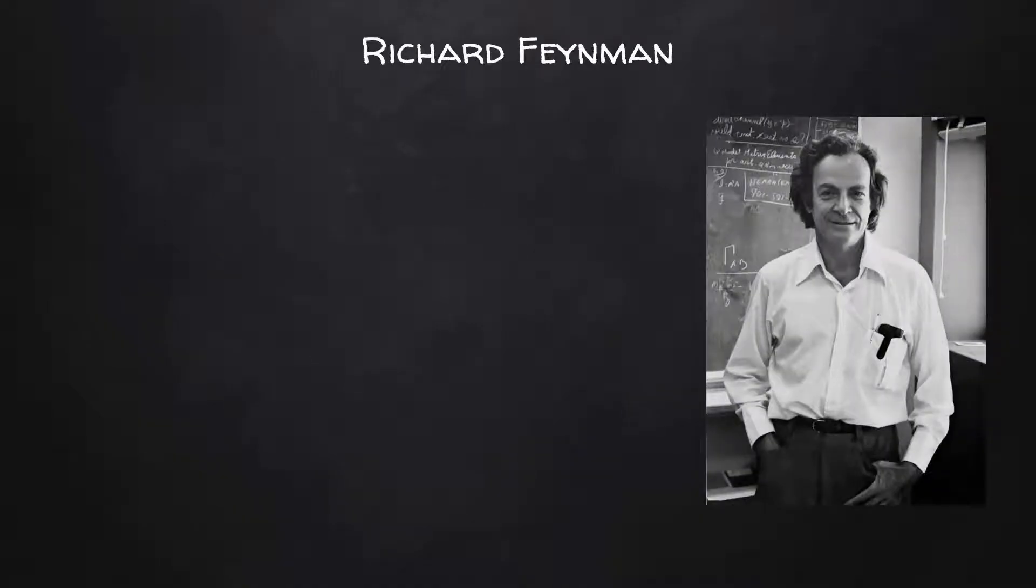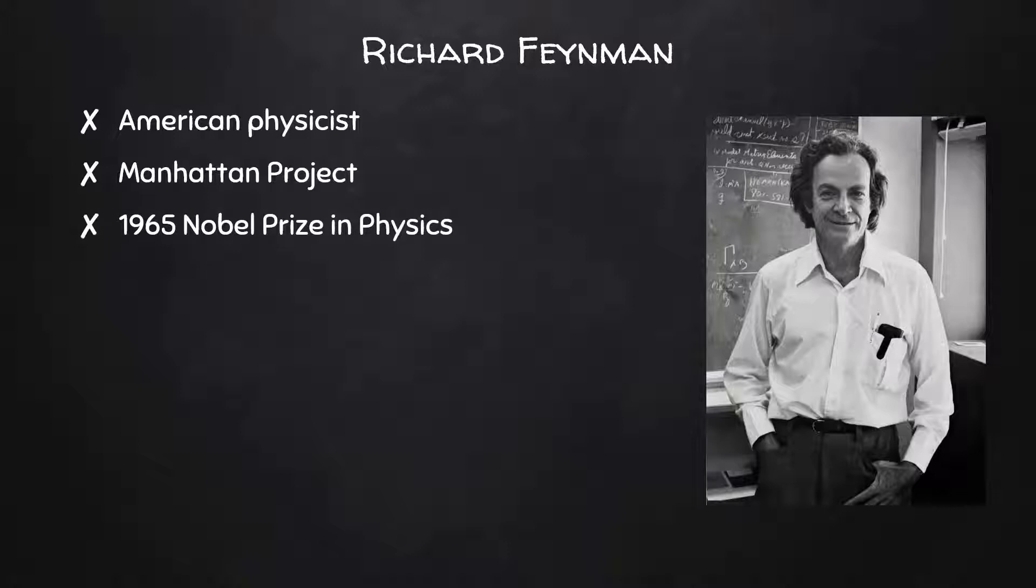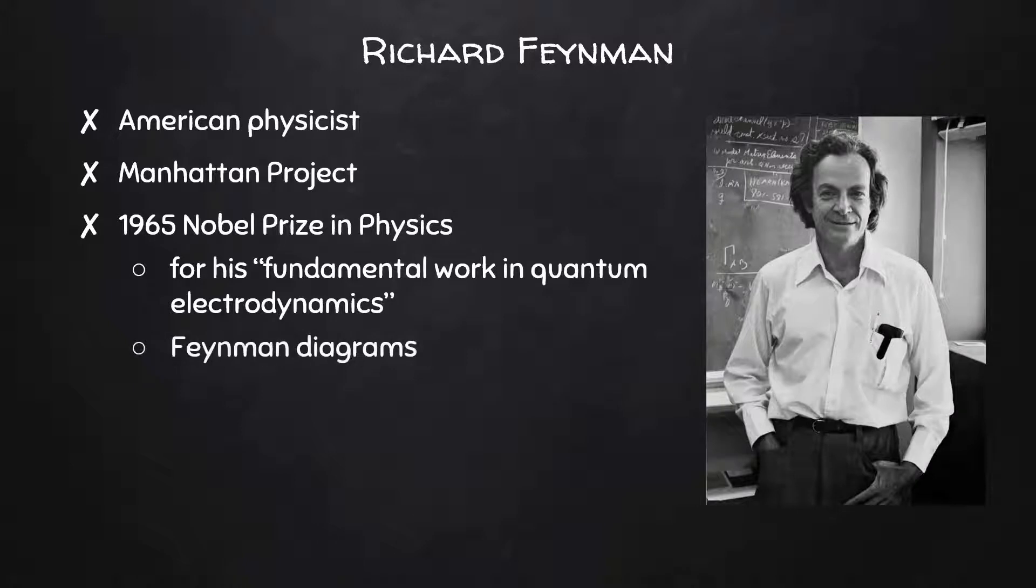Feynman Diagrams are named after Richard Feynman, an American physicist. He worked on the Manhattan Project developing the atomic bomb just after obtaining his Ph.D. He shared the 1965 Nobel Prize in Physics for his Fundamental Work in Quantum Electrodynamics, and this is the work from which we get the Feynman Diagrams.